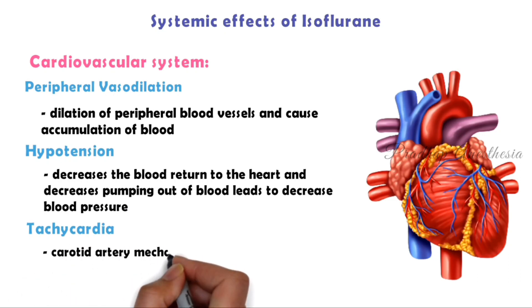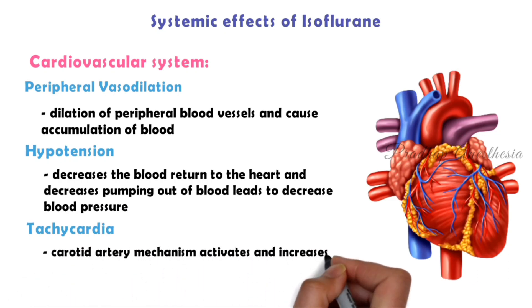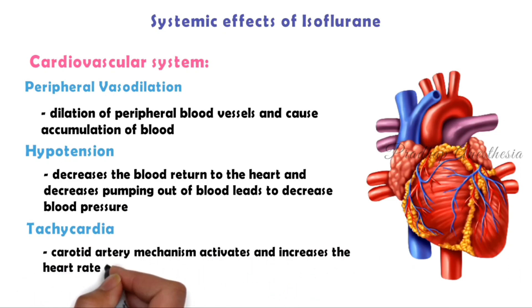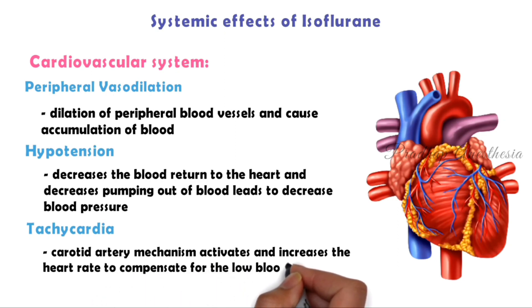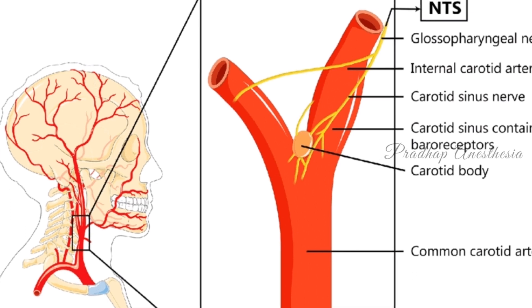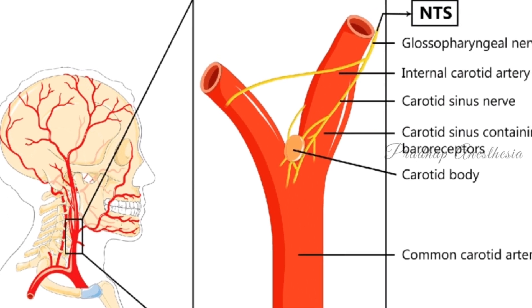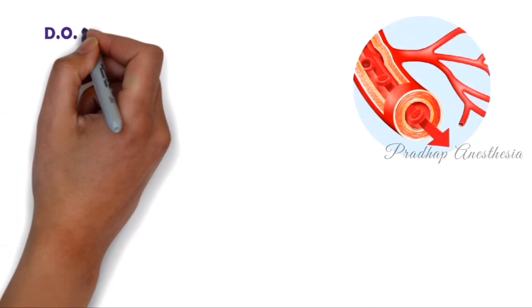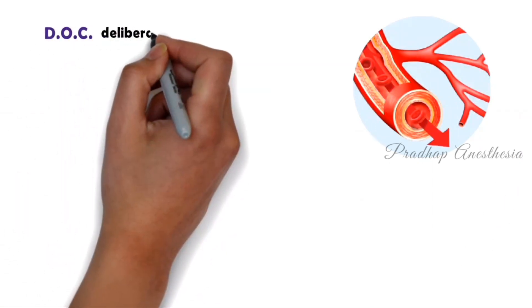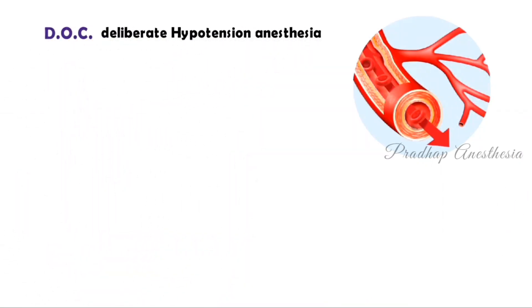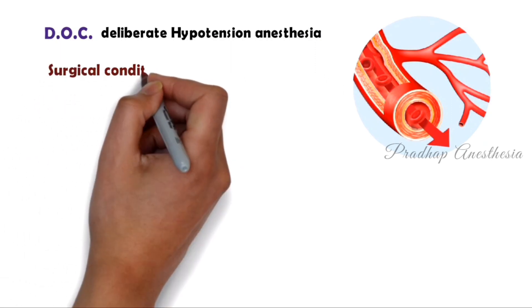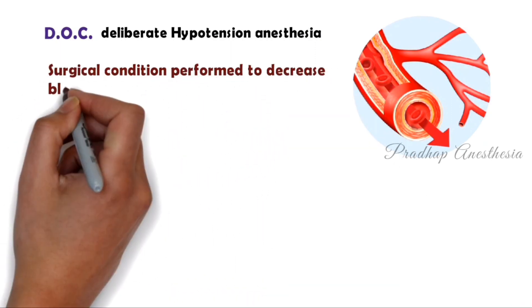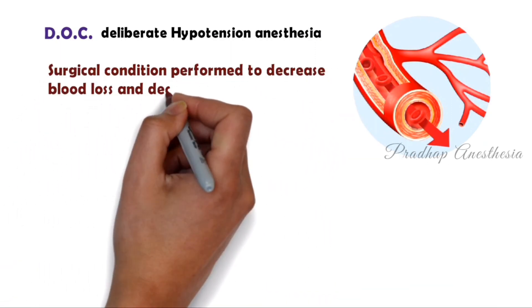Tachycardia: once the blood pressure is low, the carotid artery mechanism activates and increases the heart rate to compensate for the low blood pressure. As isoflurane decreases blood pressure, it is the drug of choice for deliberate hypotension anesthesia — a surgical condition performed to decrease blood loss and decrease blood pressure.